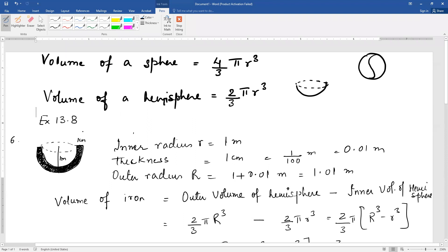Now moving to question number 6 of exercise 13.8. A hemispherical tank is made up of iron sheet 1 cm thick.